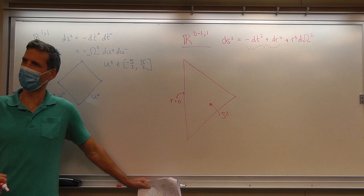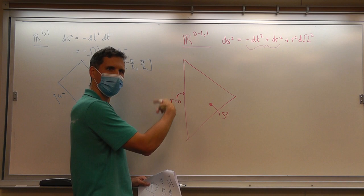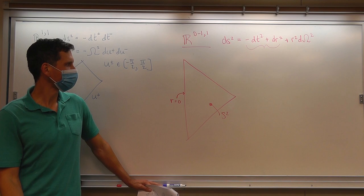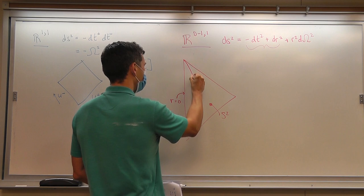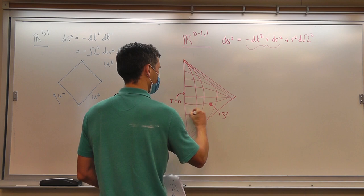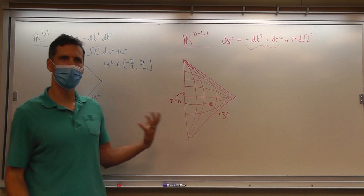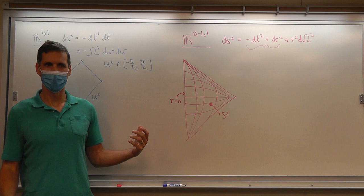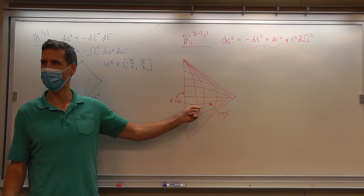Nothing special happens at that line. We really have to imagine rotating this around to make it four-dimensional. Curves of fixed r look like this, and curves of fixed t look like that. If you're working on something that's spherically symmetric, this is a great way to draw it, because we've suppressed the sphere directions, the S2 directions.